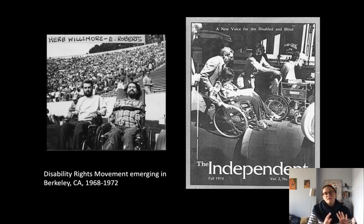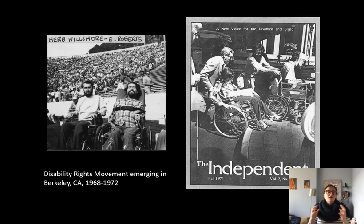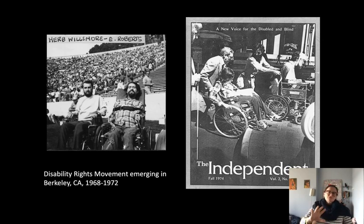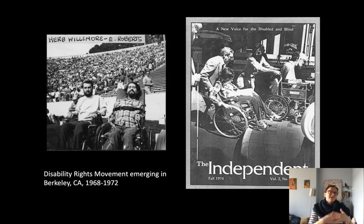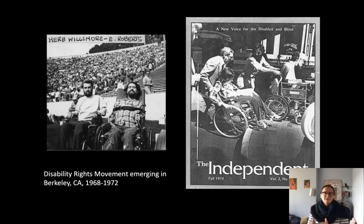Coalitions of disabled people picked up on the politics of the moment, becoming leaders involved in city planning and architecture. The story so far is a tension between design professions interested in a standardized body and an activist world pointing out variations — that it's not just one disabled population, but multiple needs, and that there's a need for infrastructure, not just personal assistive technology. Up until the 1970s, there was really not much interaction between the design professions and this rights movement.